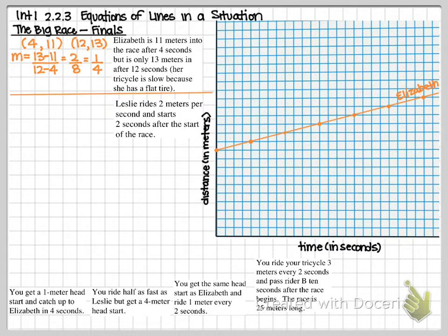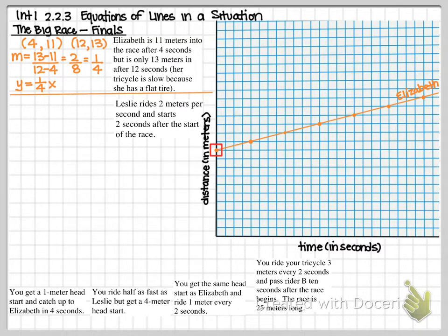I'd also like us to write Elizabeth's equation. We know her slope is 1/4, so it's y = 1/4 x. Then if we look back at the graph, we just found the y-intercept — the starting value. I red-boxed it on the graph and it looks like it's at 10. So the equation is y = 1/4 x + 10.